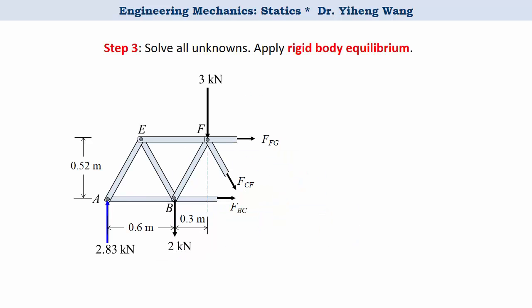Step three, apply rigid body equilibrium to solve for our unknowns. We start with a free body diagram of the left segment, and since we have already solved for the support reaction at point A, we have only three unknowns: FBC, FCF, and FFG. And we can write three equilibrium equations.